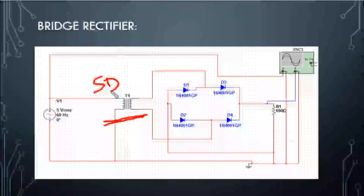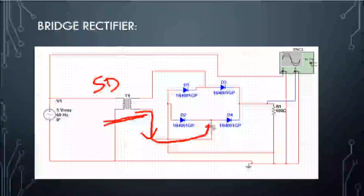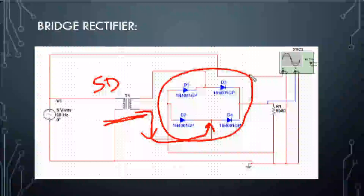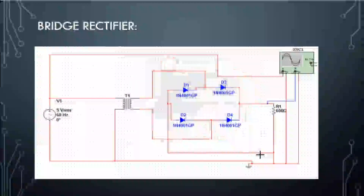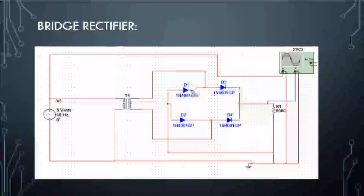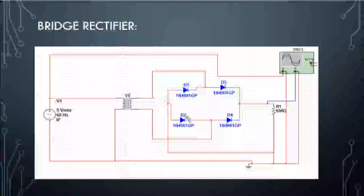Now we look at how to connect the diodes and terminals. We use 4 diodes in a bridge rectifier. Here we use one diode, one diode, and two diodes. So in the bridge rectifier we use four diodes. The connections are: D1 cathode, D3 anode, D2 cathode, D4 anode. The two cathodes and two anodes are connected. This procedure is the bridge rectifier.